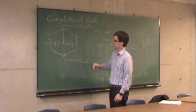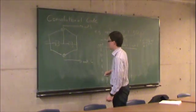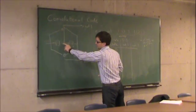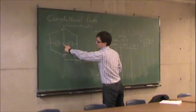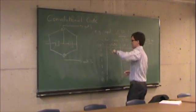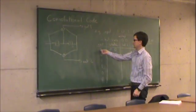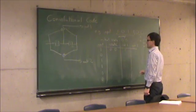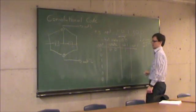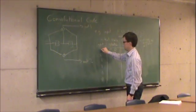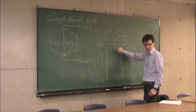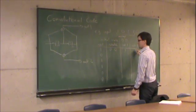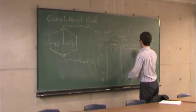Output one is the input, first flip-flop, and second flip-flop added together mod two. So that's 1 plus 0 plus 0, which equals 1. Output two is the input and the second flip-flop added together mod two. That's 1 plus 0, which is 1.